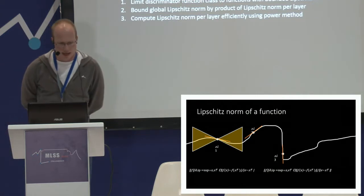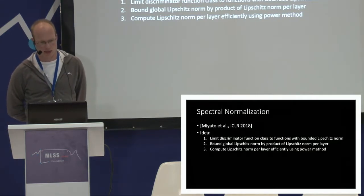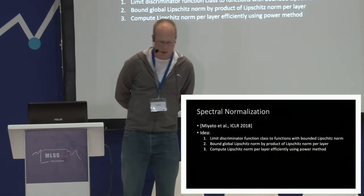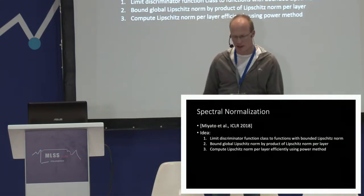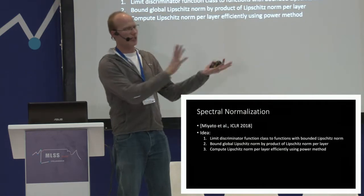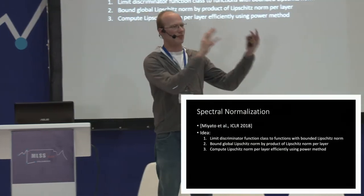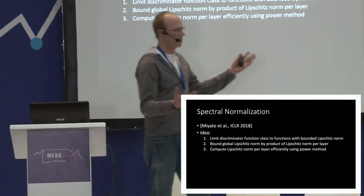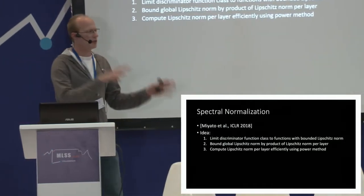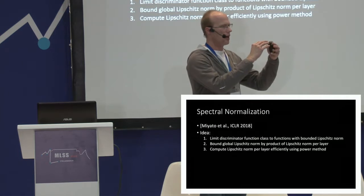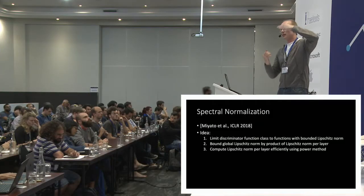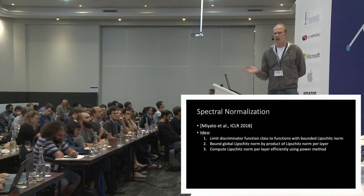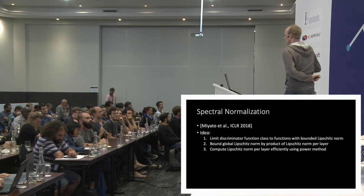Spectral normalization is a paper from last year by Miyato et al. The idea is as follows: we want to constrain the Lipschitz norm of a function represented by a neural network, but we can't compute that Lipschitz norm. When something is intractable, you have two choices: you can either approximate it — deriving a procedure that estimates the intractable quantity — or you can bound it, getting a value which is always larger or smaller than the true value depending on the direction you want. For example, the evidence lower bound in variational inference is a lower bound on the marginal likelihood.